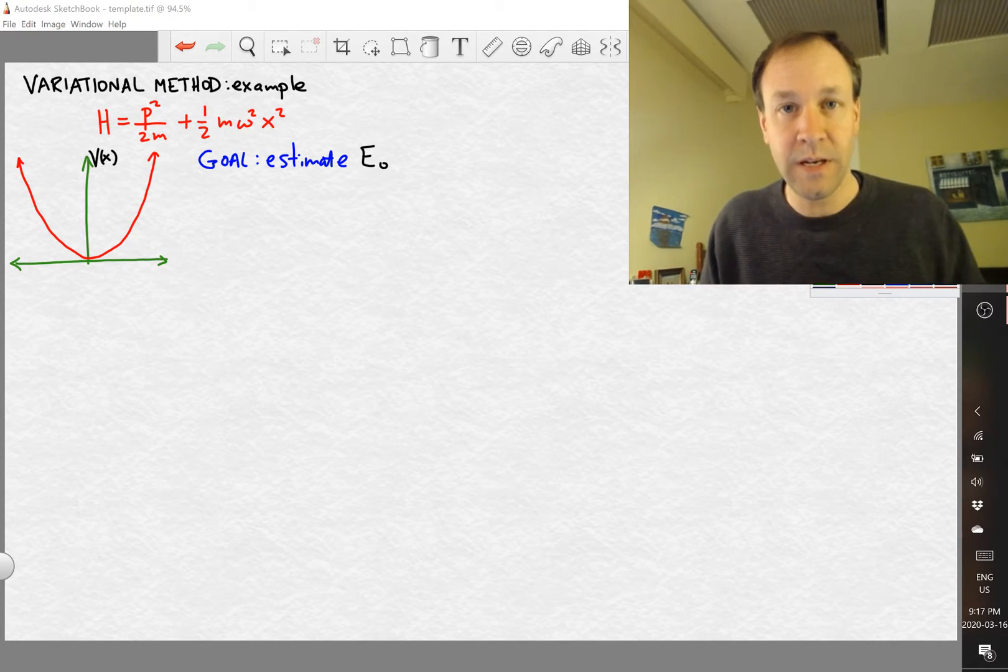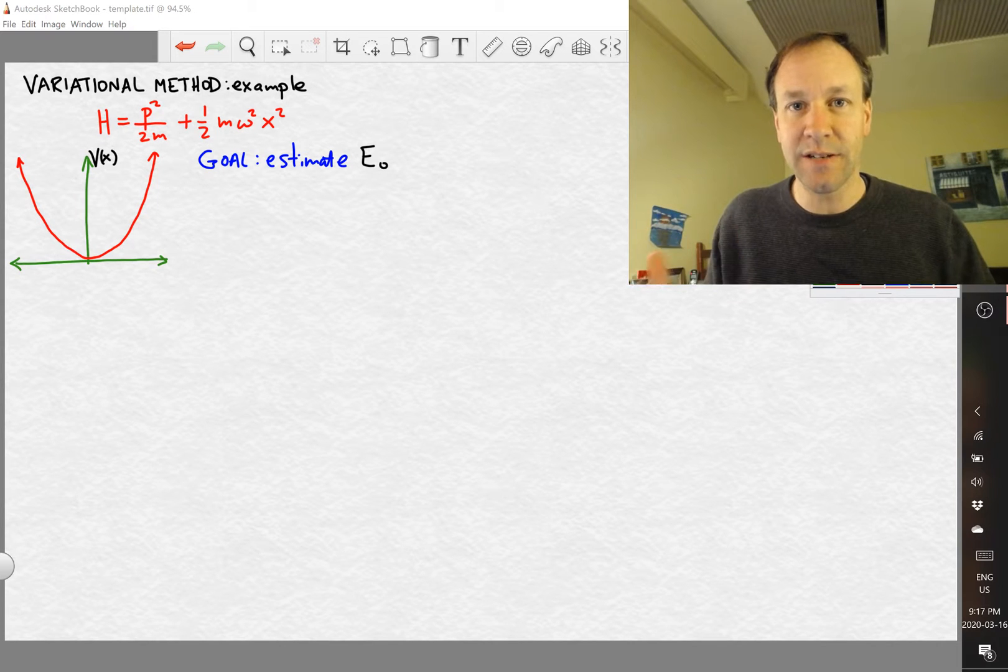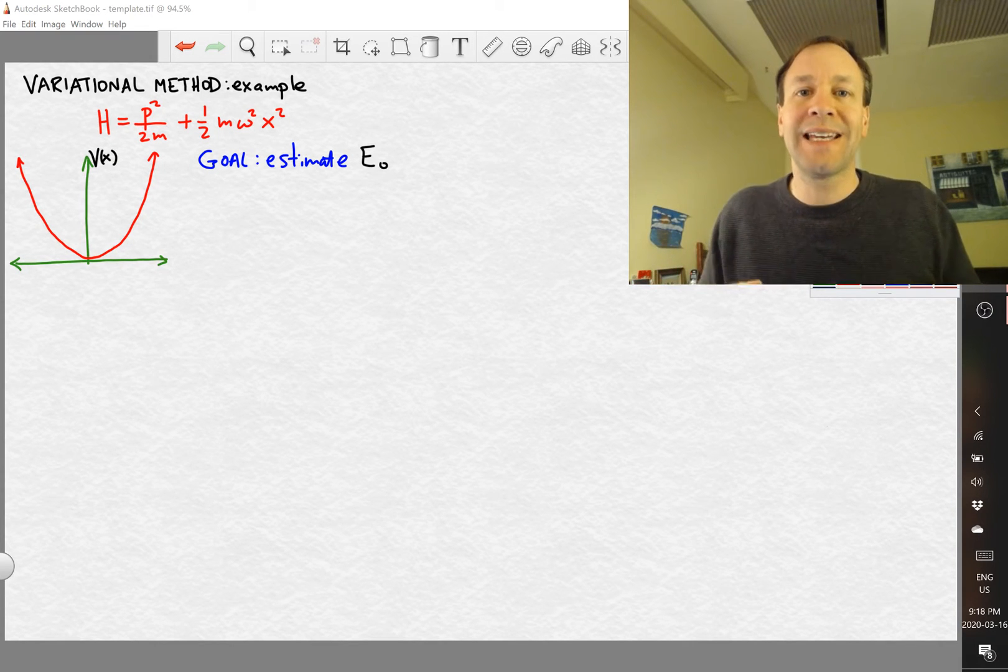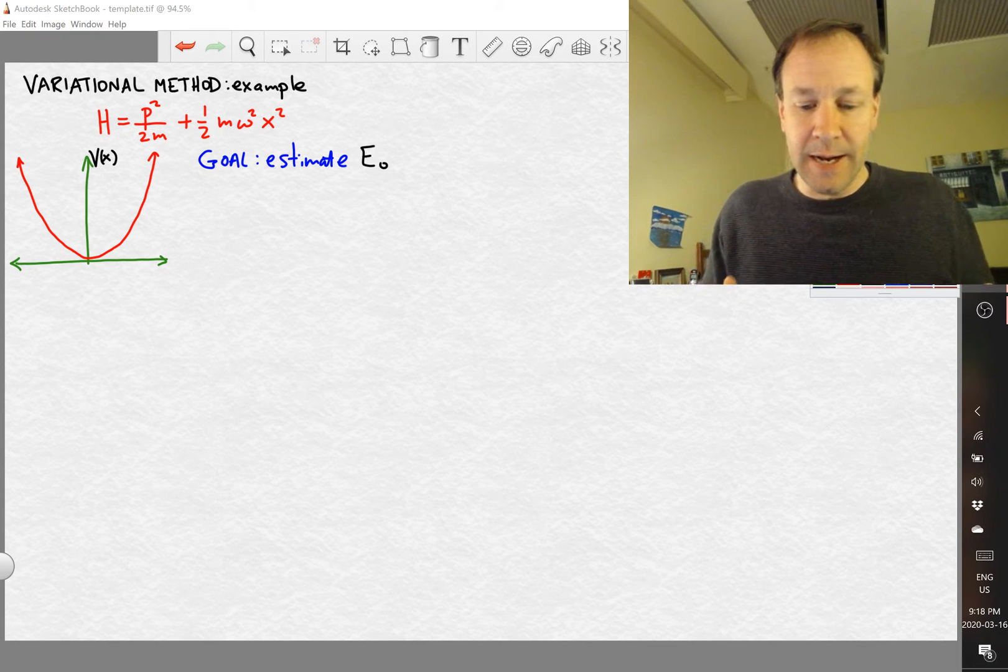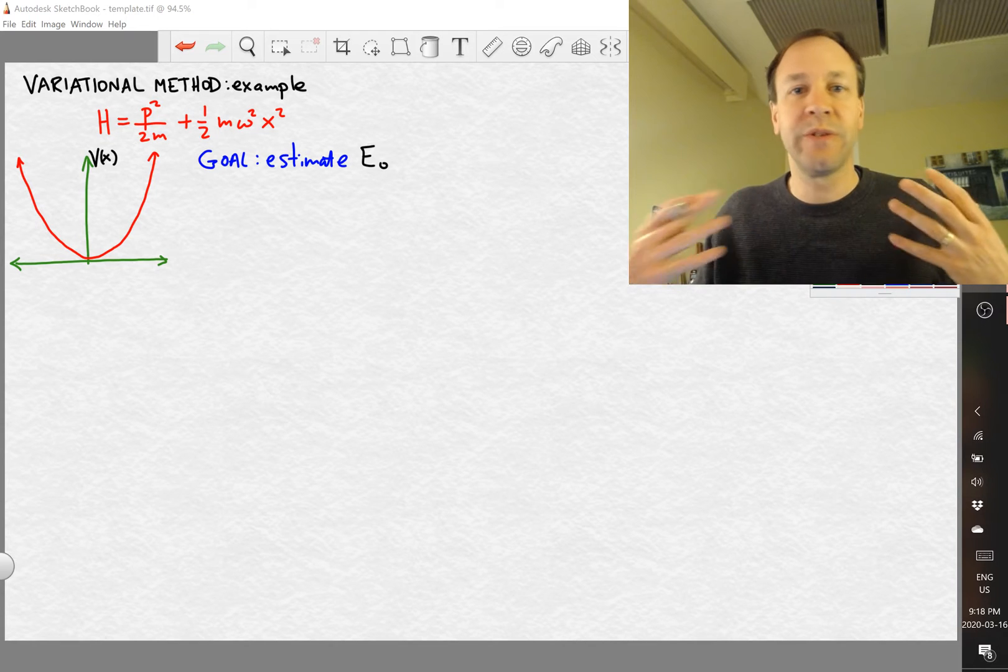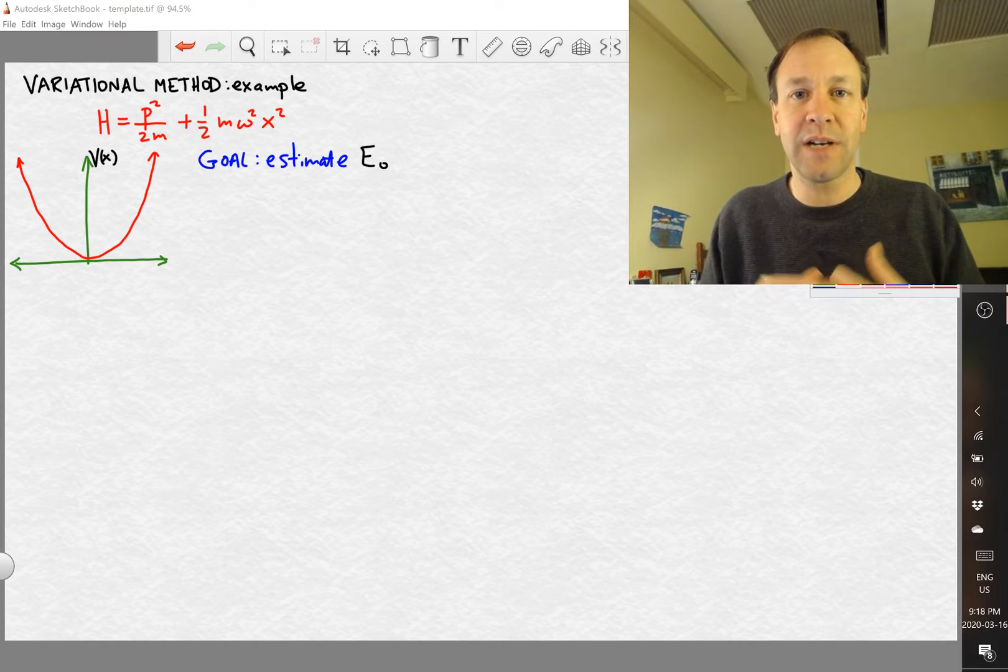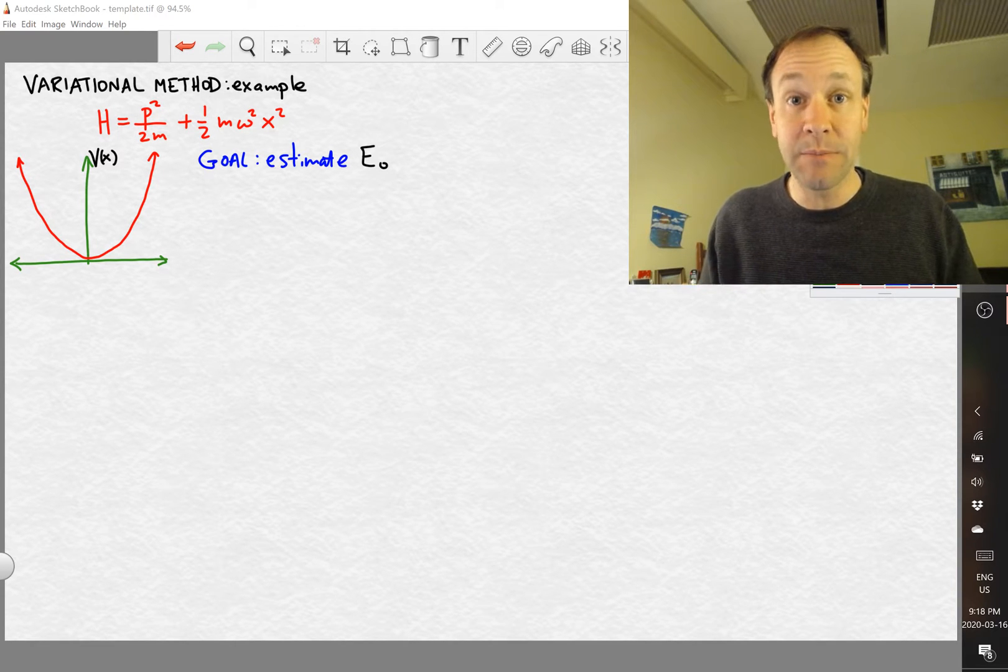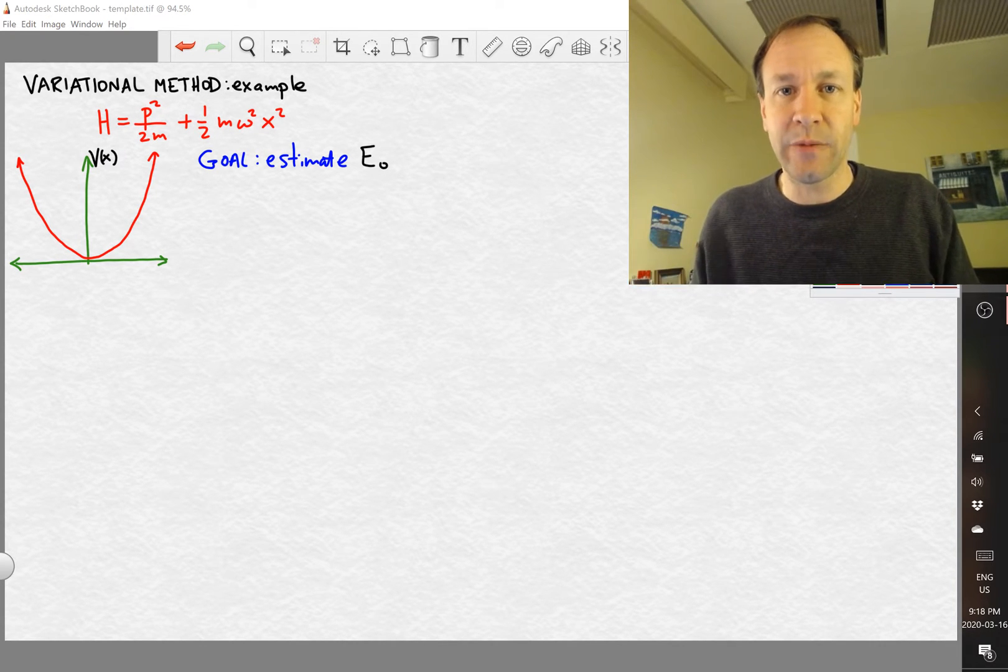Now, you're probably saying to yourself, isn't that just the harmonic oscillator? I know what the ground state energy is. Why are we doing this? And so here, it's just an example. And I want to imagine that maybe we are not so good at solving differential equations. So maybe we know some quantum mechanics, but we can't remember anything about this particular example. So we're going to try to use the variational method just to get an estimate of what that ground state energy might be. We're going to assume that we don't know what the actual ground state wave function looks like.